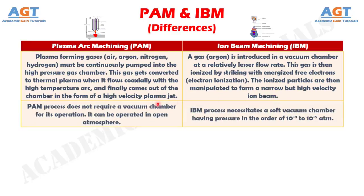Number 7: plasma arc machining process does not require a vacuum chamber for its operation — it can be operated in open atmosphere. Whereas iron beam machining process necessitates a soft vacuum chamber having pressure in the order of 10⁻³ to 10⁻⁵ atmospheric pressure.